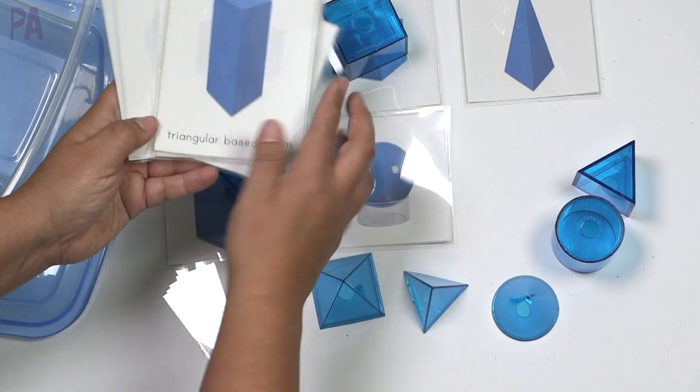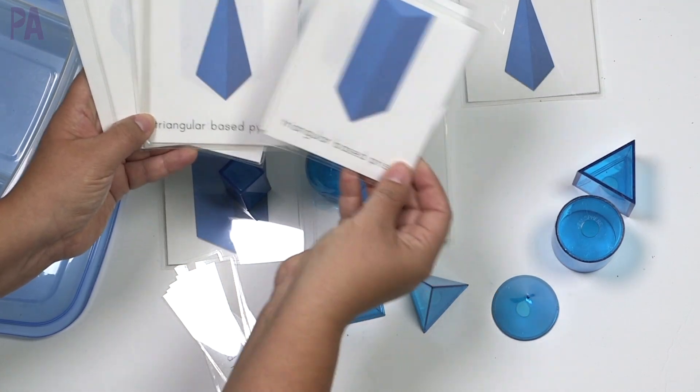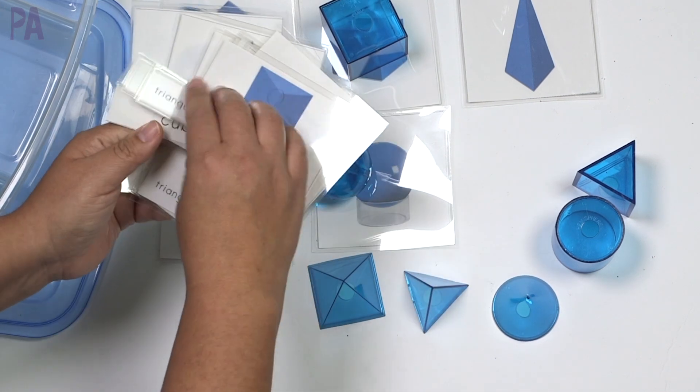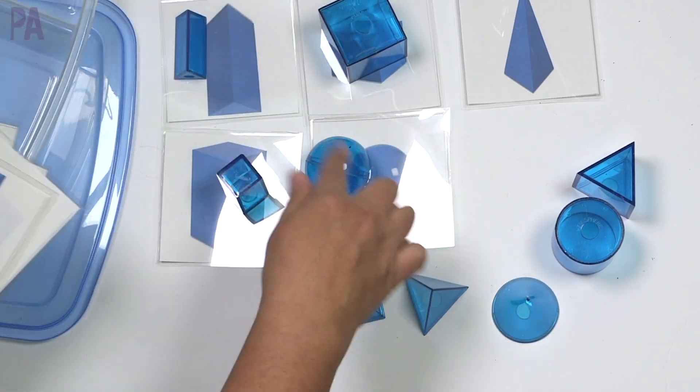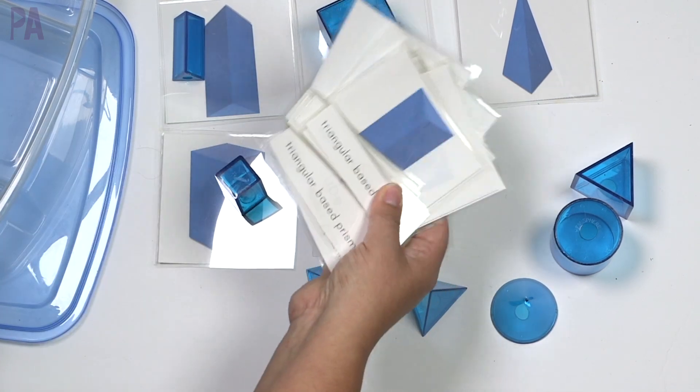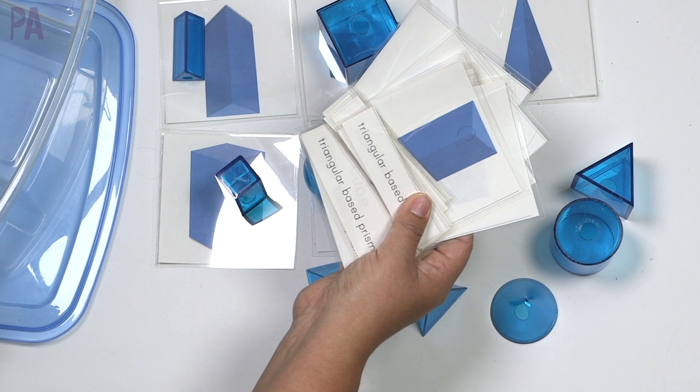And then you also can graduate to the names because the names are on here. And then you can use the three parts here to match up the names a little bit more advanced, but if they're just toddlers, my kids were doing this when they were really young, matching up the object to the card. And then we also used these as they got a little bit more experience.